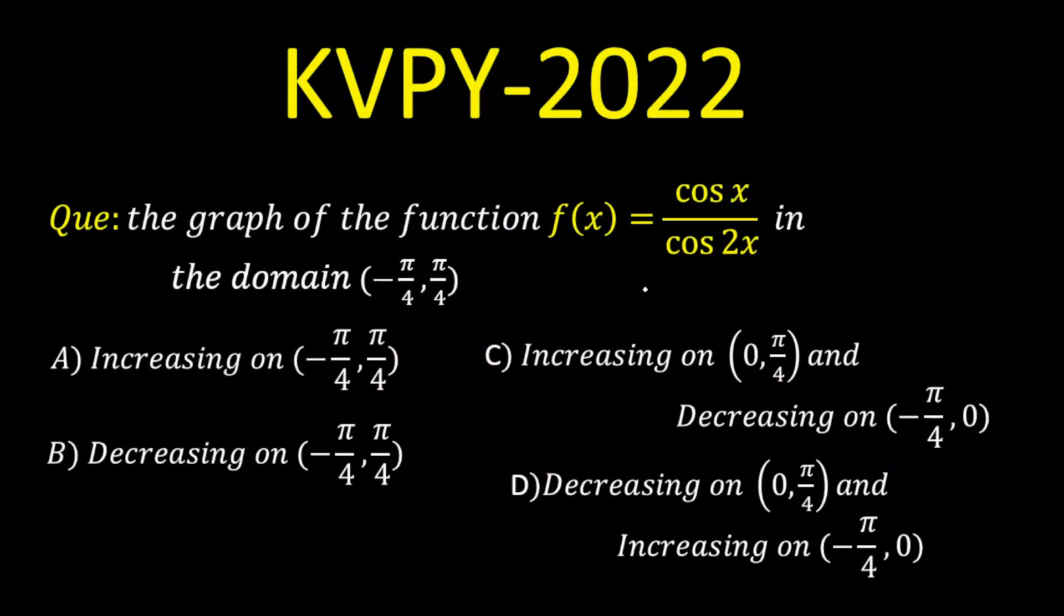Now, today we are going to solve a question on application of derivative. The question is, if f of x is given as cos x upon cos 2x, in the domain minus pi by 4 to pi by 4, we have to tell in which interval it is increasing and in which interval it is decreasing.